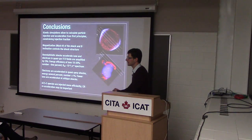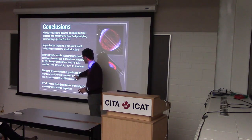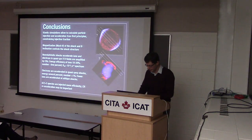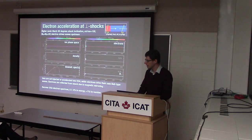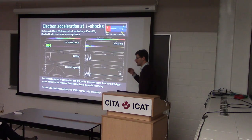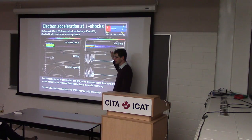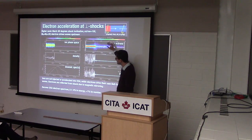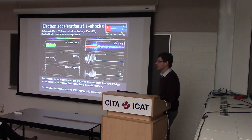To get the electron acceleration result, we had to collapse the transverse dimension — so that run was one-dimensional. We can do three components of velocity but it's one-dimensional in space. In 2D this may change. It's becoming feasible now to do full PIC simulations at shock speed.